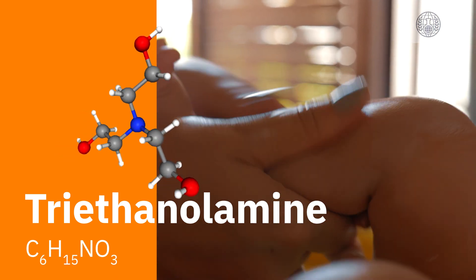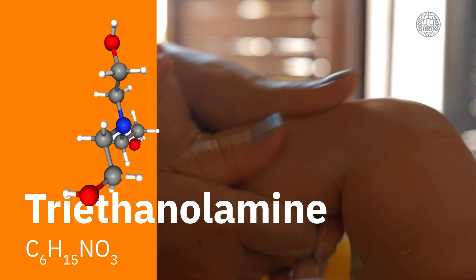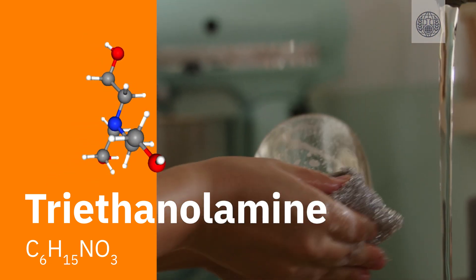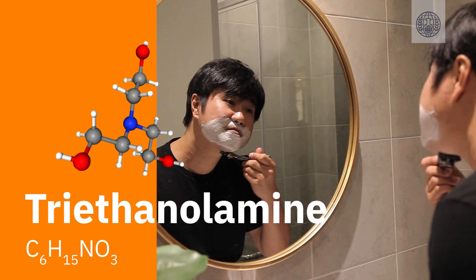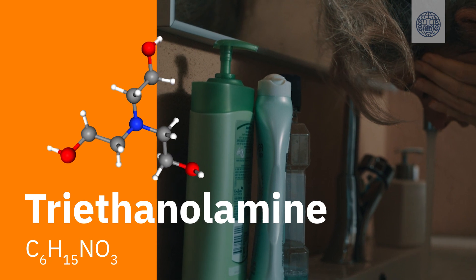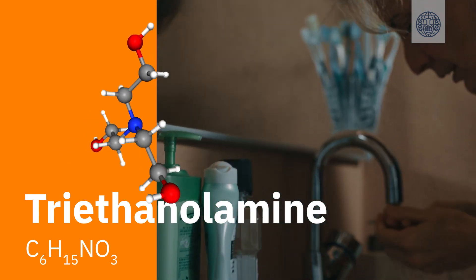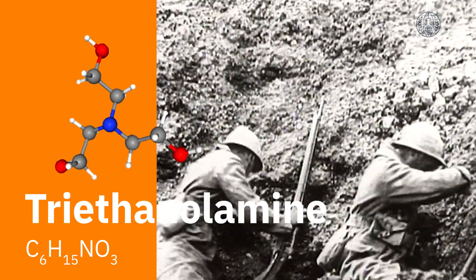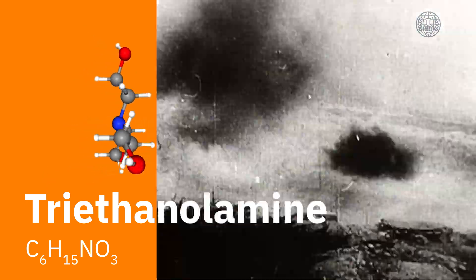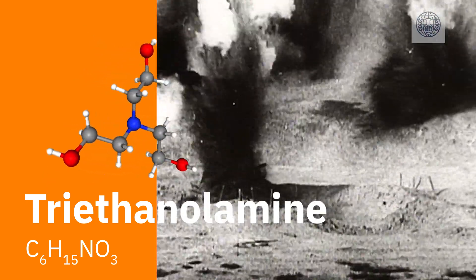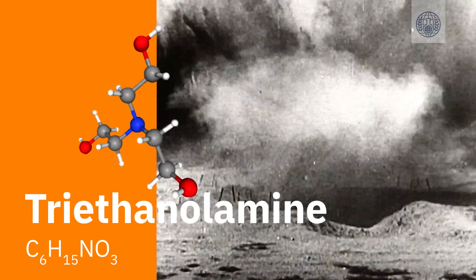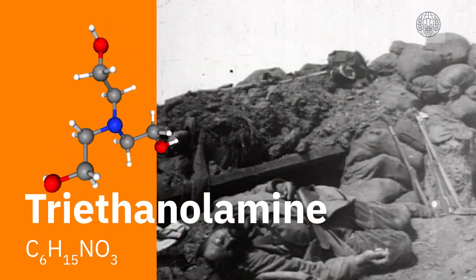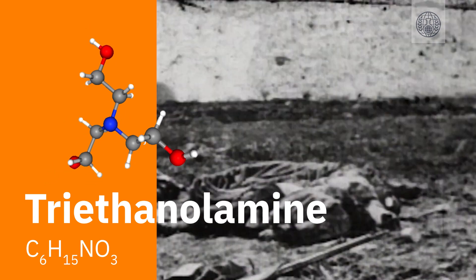Triethanolamine is another common chemical, used in the manufacture of products such as sunscreen, dishwashing liquids, hand sanitizers, shaving cream, moisturizer, shampoo and makeup remover. But it is also a precursor to a nitrogen mustard, which is a type of blister agent developed as a chemical weapon after World War I. Sulfur mustard, another type of blister agent, caused the blindness, disfigurement and death of thousands of soldiers during the war.